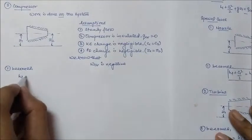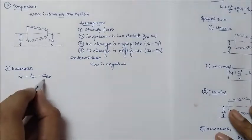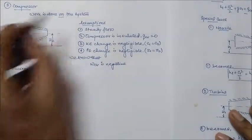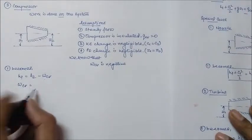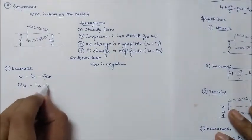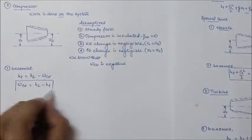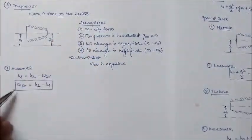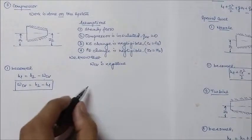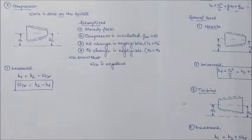So equation 1 becomes H1 minus W_CV equal to H2, since W_CV is negative. Therefore W_CV is equal to H2 minus H1. This is the equation for a compressor taking the standard assumptions from the steady flow energy equation. These are some special cases of the steady flow energy equation.